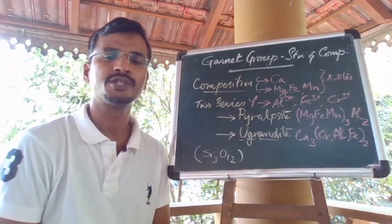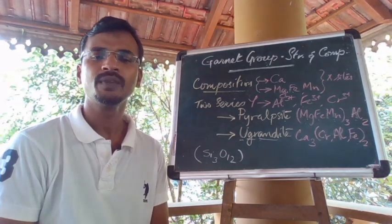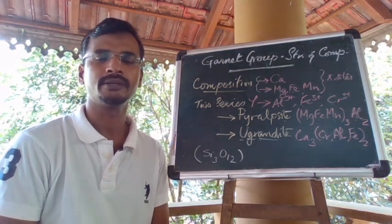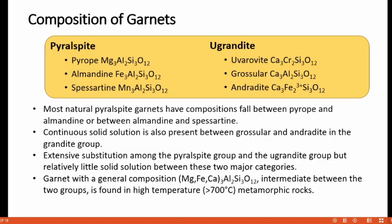Extensive substitution of magnesium, iron and manganese is possible in the X-site in the pyralspite group. The pyralspite series derives its name from components of the series: pyrope, almandine and spessartine.